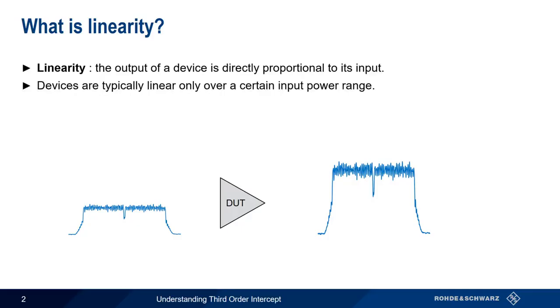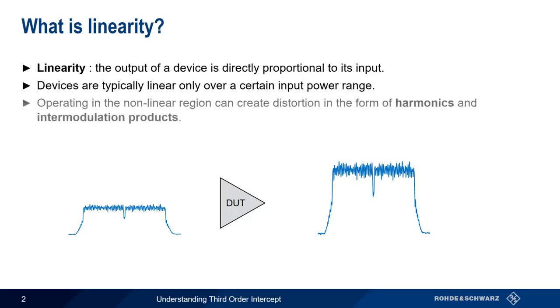What happens when a device becomes nonlinear? One of the most important consequences of a device being operated in its nonlinear region is the device will generate harmonics and intermodulation products. Let's take a look at both of these.